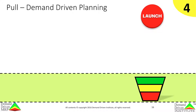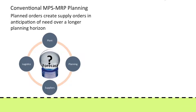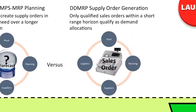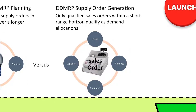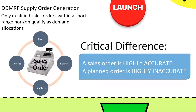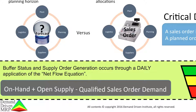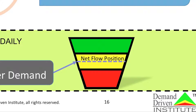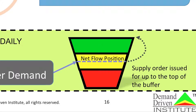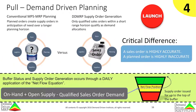Demand-driven planning is the fourth component of DDMRP. In DDMRP, planning is the process of generating supply orders, using a unique equation. The demand element of that equation has no forecasted orders. Conventional MRP planning uses planned orders derived from forecasts to generate orders in anticipation of need over a longer planning horizon. DDMRP uses only qualified sales orders within the immediate range horizon as demand allocations. A sales order is highly accurate — it is an explicit statement of what will be consumed — while planned orders are highly inaccurate. This unique supply order generation equation is called the net flow equation: quantity on hand is added to quantity of open supply, then quantity of qualified demand is subtracted. This produces the day's net flow position. If the net flow position is below the top of the yellow zone, an order is issued for the amount to reach the top of the green zone. DDMRP is designed to never net to zero.